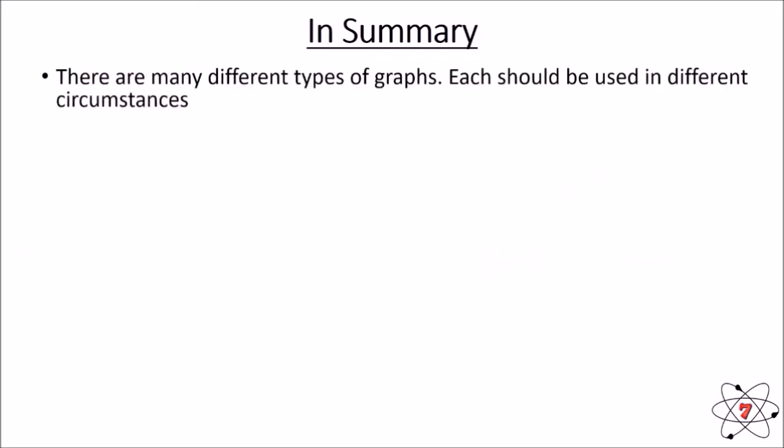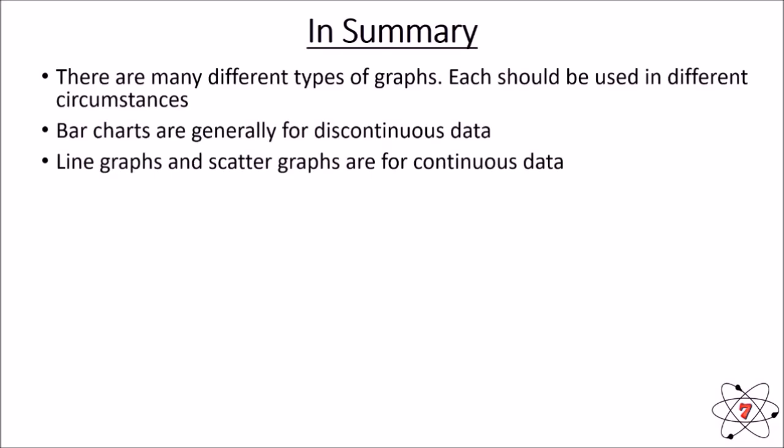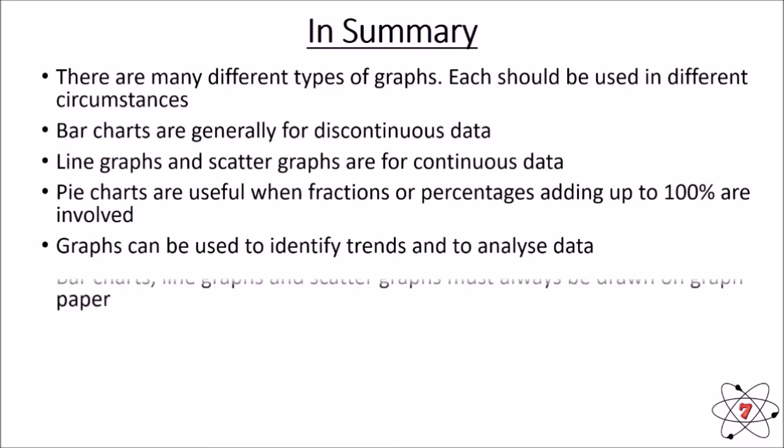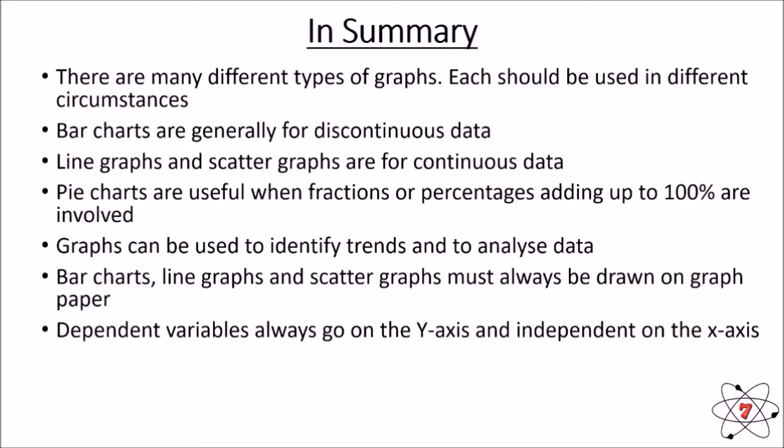In summary, there are many different types of charts and graphs. Each one is used in a different circumstance. Bar charts are generally for discontinuous data. Line graphs and scatter graphs generally for continuous data. Pie charts are useful when fractions and percentages add up to 100%. And graphs can be used to identify trends and analyze data. Bar charts, line graphs, scatter graphs, must always be drawn on graph paper, never on plain paper. The dependent variable always goes on the x-axis. Line graphs and scatter graphs normally require a line of best fit.